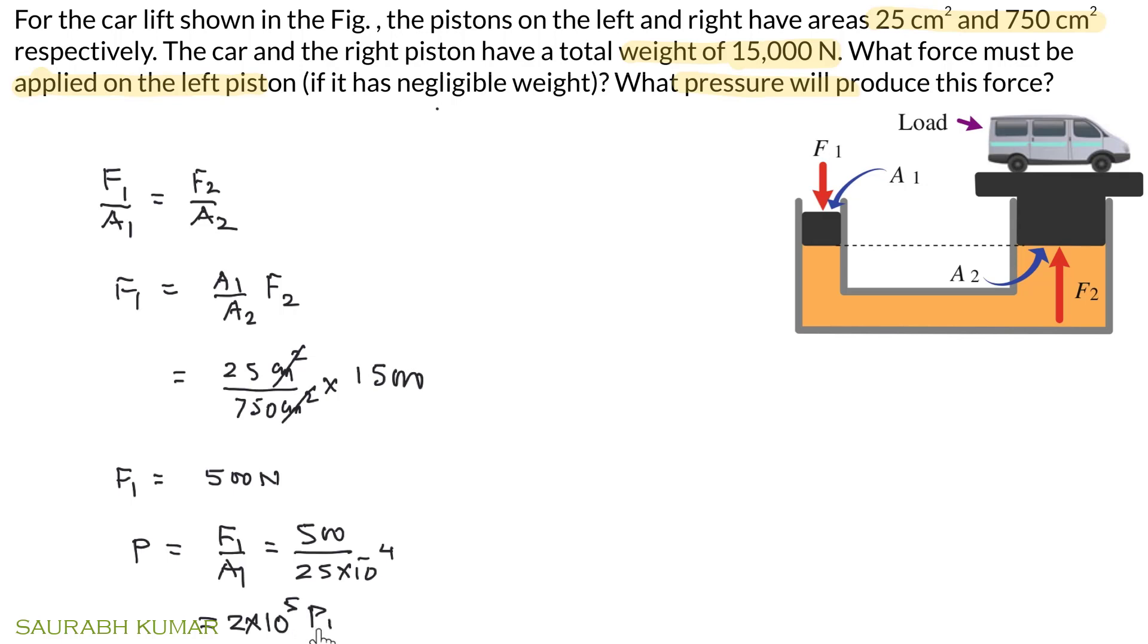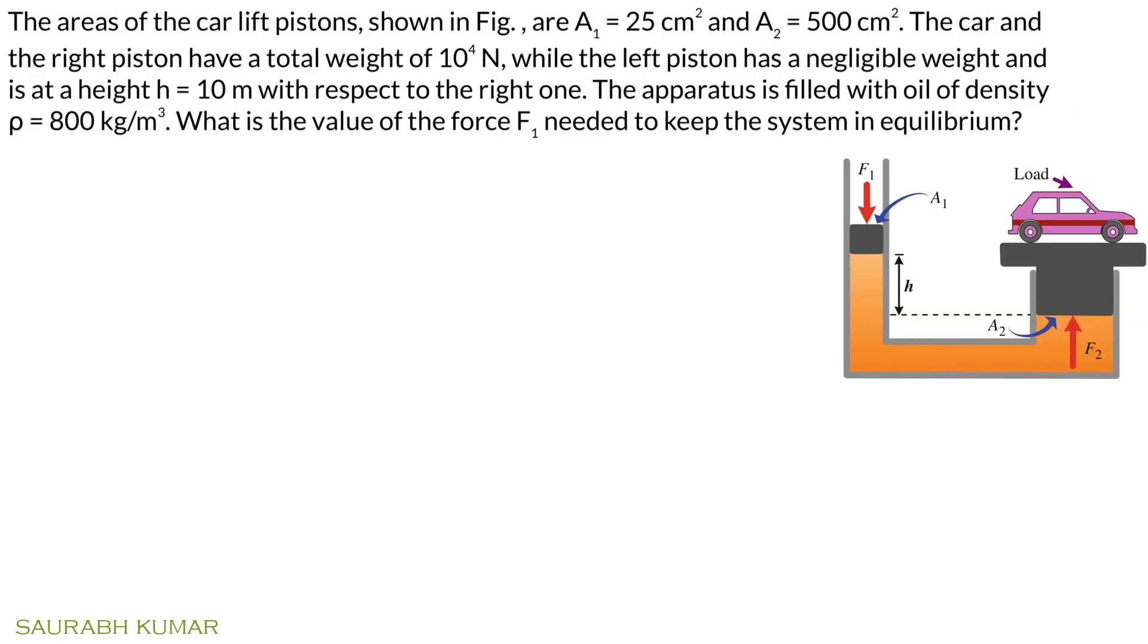Question: The area of car lift pistons shown in the figure are A1 = 25 cm² and A2 = 500 cm². The car and right piston have a total weight of 10⁴ Newtons, while the left piston has negligible weight and is at height h = 10 meters with respect to the right one. The apparatus is filled with oil of density 800 kg/m³. What is the value of force F1 needed to keep the system in equilibrium?